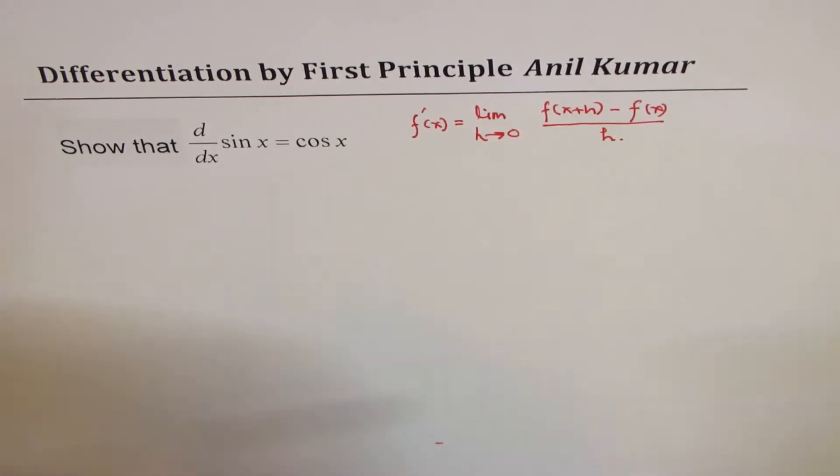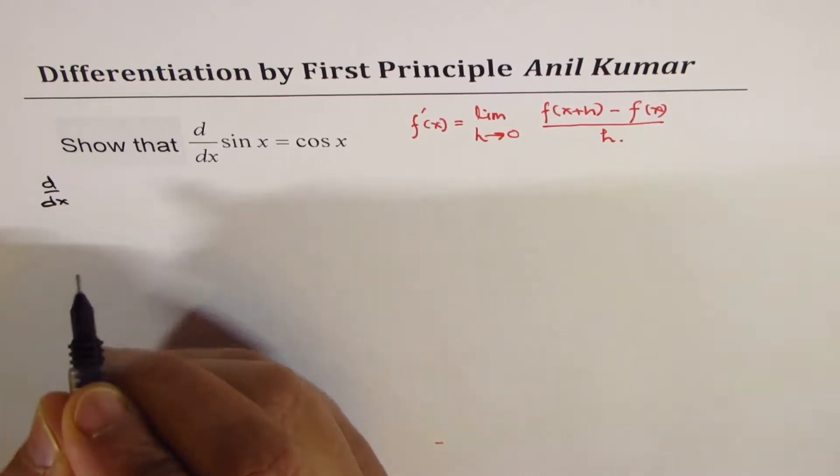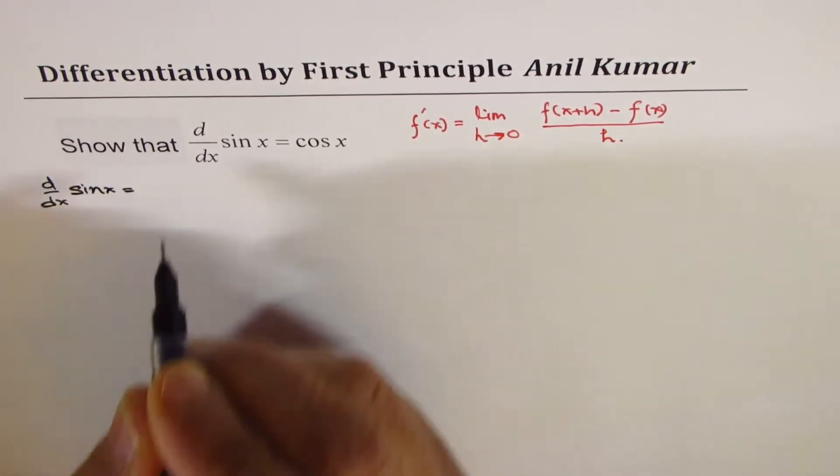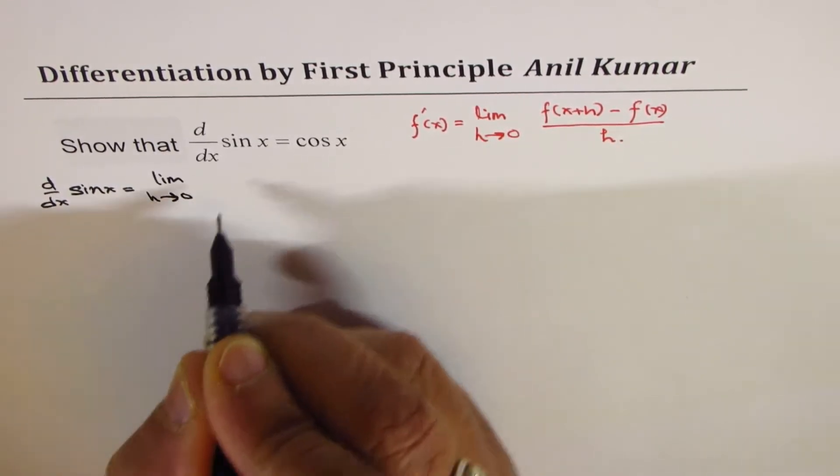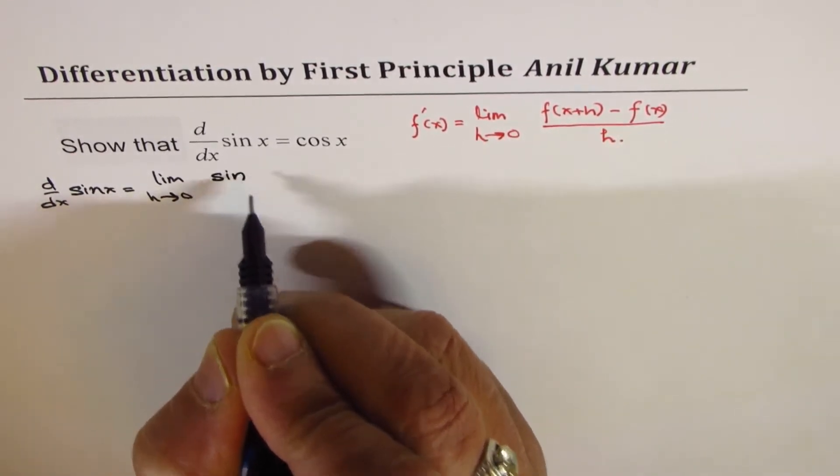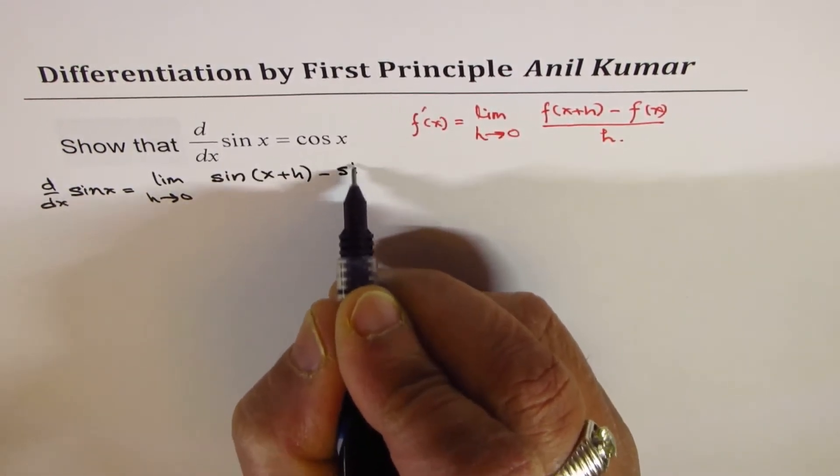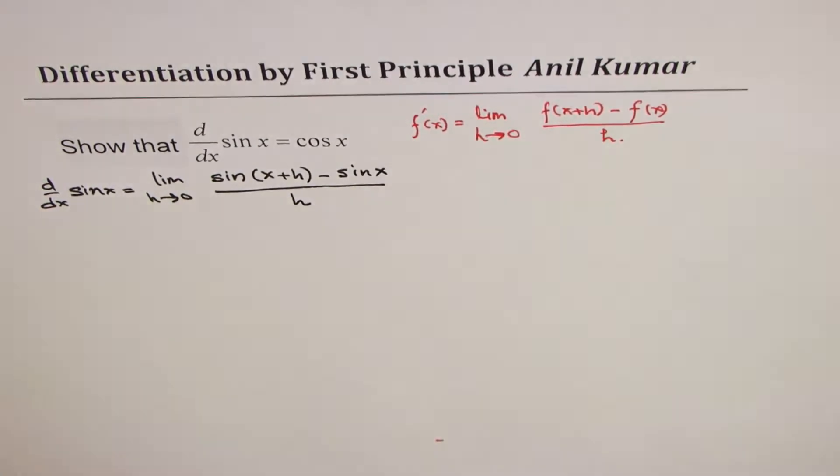Using this, we can write the derivative d/dx of sine x is equal to limit h approaches 0, sine of x plus h minus sine of x over h. That is what it is.